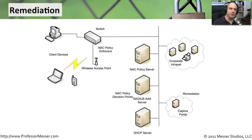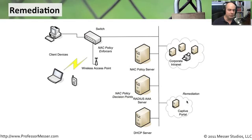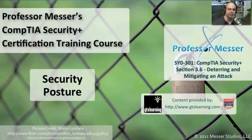A lot of this can be automated through 802.1x. We've talked often about network access control, and almost always with network access control there is a section of the network just for remediation. That's where we'd want to have all of those security tools available so that if a user finds that the disk encryption is not enabled on their computer or the antivirus is not up to date, they can go to one particular place on the network and still have access to fix the problem. You want to be sure that every system on your network is running that particular baseline so that you can be absolutely sure that your security posture is the one you want for your organization.